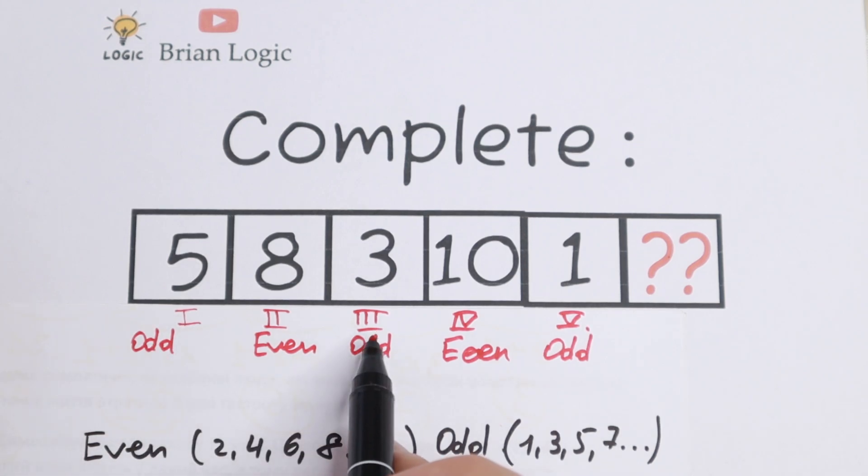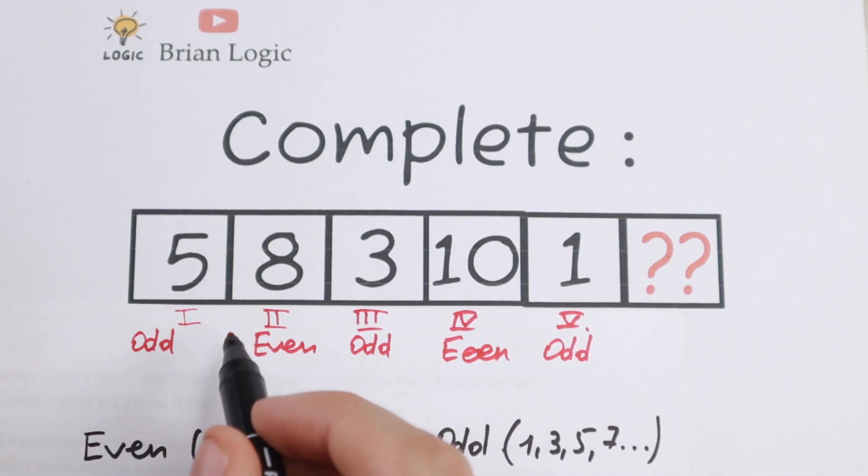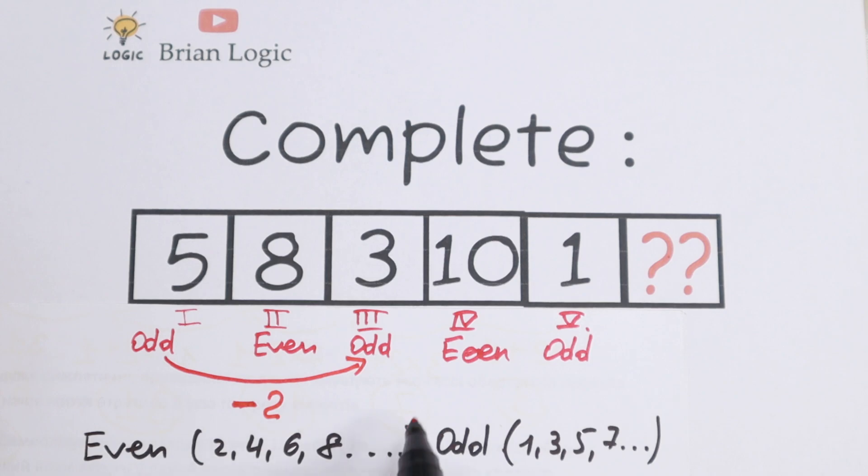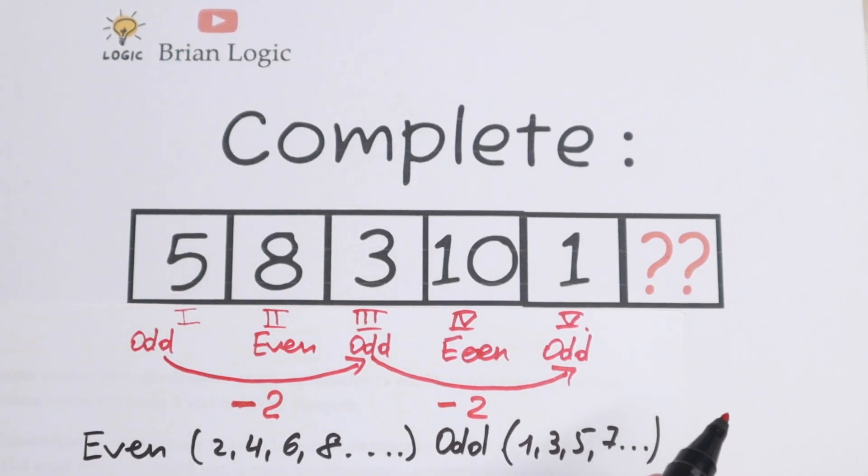So we'll have 5, 3, 1. So odd numbers we subtract by 2. As you can see from this 5 we need to subtract minus 2 to get 3. And from this 3 you need to subtract 2 as well to get this 1.